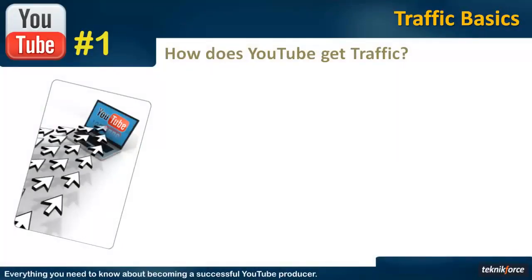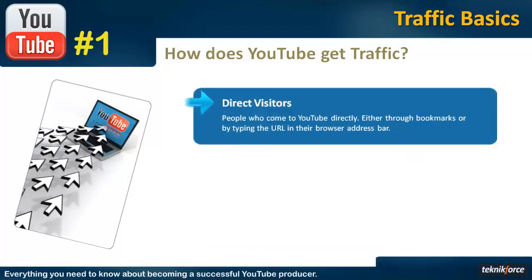Before we talk about how you can get traffic from YouTube, let's understand how YouTube gets its own traffic. The basic source is direct traffic. These are the visitors who have come to YouTube through bookmarks, or they've set YouTube as their homepage, or they might be typing YouTube's URL in their address bars. This is the kind of traffic that Google and Facebook get. Google is the most popular website in the world, and Facebook is number two. These two websites get most of their traffic in the form of direct visitors, but YouTube gets a large chunk from other sources too.